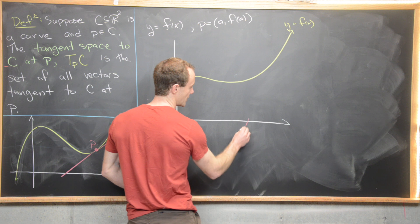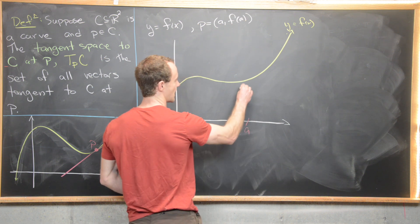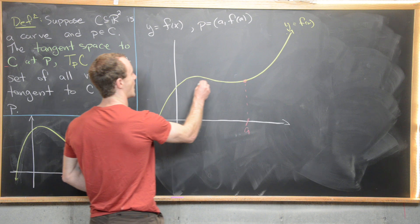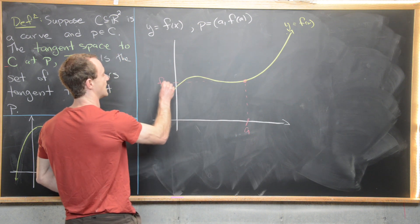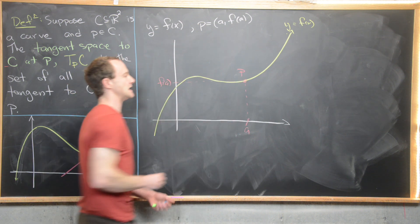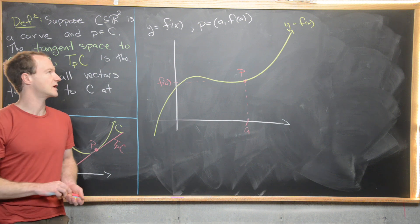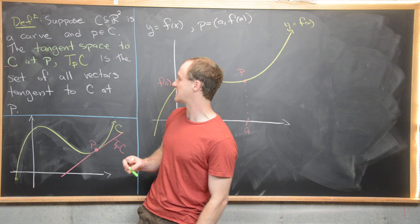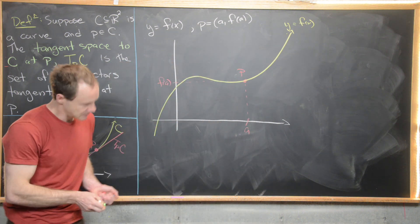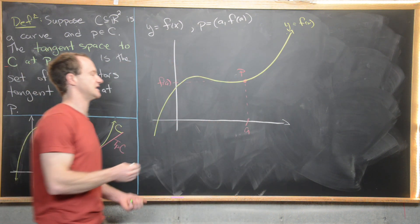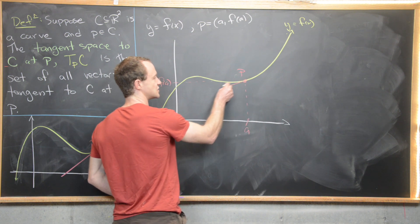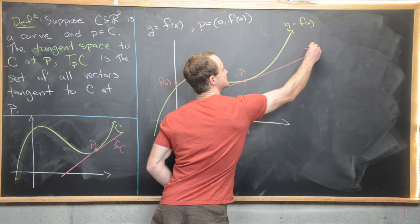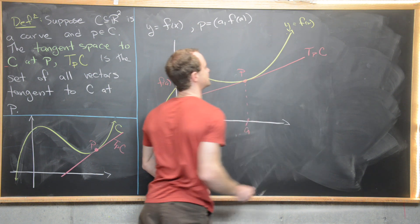Let's go ahead and put a point along this curve. So here we have A, and then the y-coordinate of this will be f of A, and so this is our point P. Now the next thing we want to do is get a handle on a vector inside of this tangent space. Let's go ahead and draw the tangent space right here — the tangent space is like the tangent line. So this is T_P of C.